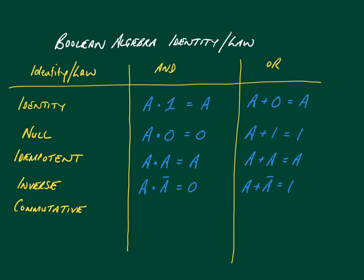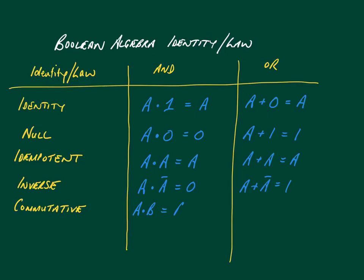With commutative, changing the order of the operands doesn't actually change the result. So in this example, if you do a AND b, that's exactly the same as b AND a. Same with the OR: a OR b is exactly the same as b OR a.